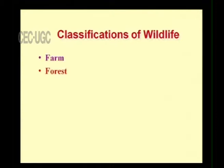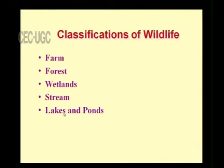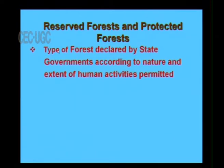Wildlife can be classified into farms, forest, wetlands, streams, lakes, and ponds. Today we are going to discuss only forest management. There are many kinds of forests, and the reserved forest and the protected forest are the two major classifications. The type of forest is declared by state governments according to the nature and extent of human activities permitted.